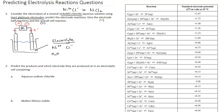Electrons are flowing into one side of the platinum electrode, building up on the metal surface, while on the other side electrons are being removed. The key point is that it's the ions in solution that will either grab electrons from or donate electrons to the electrode surface.